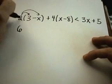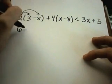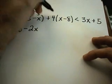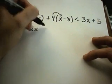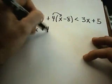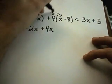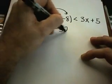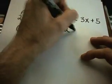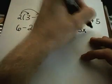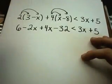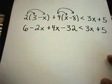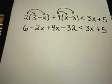So 2 times 3 is 6. 2 times -x gives me -2x. Then I'll take my 4 times x, I'll get +4x, plus 4 times -8 is -32. There's not really much to simplify on the right-hand side. Now there's a bunch of ways you could start simplifying. I'm going to combine my like terms.